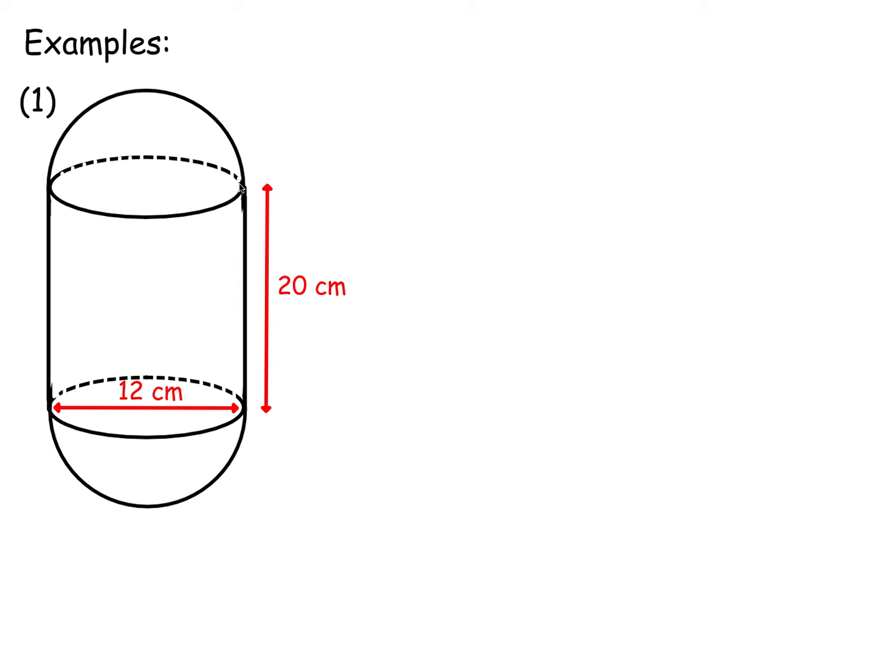On each end is a hemisphere. That's half a sphere. So two half spheres make up one whole sphere. So the volume here consists of one sphere and one cylinder. And you work them out separately and add them together.